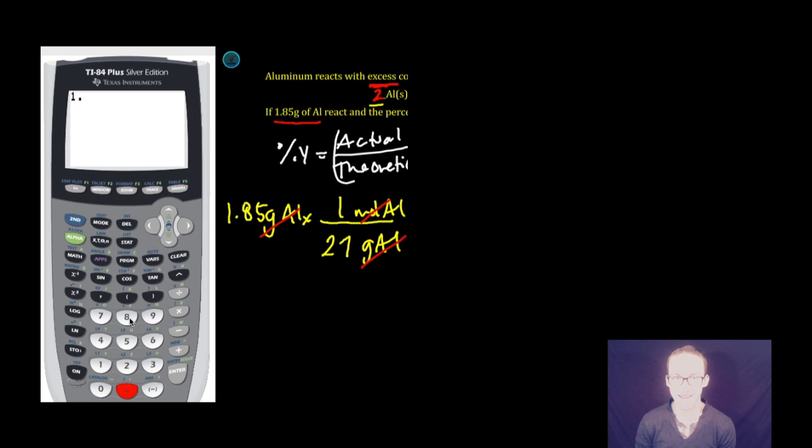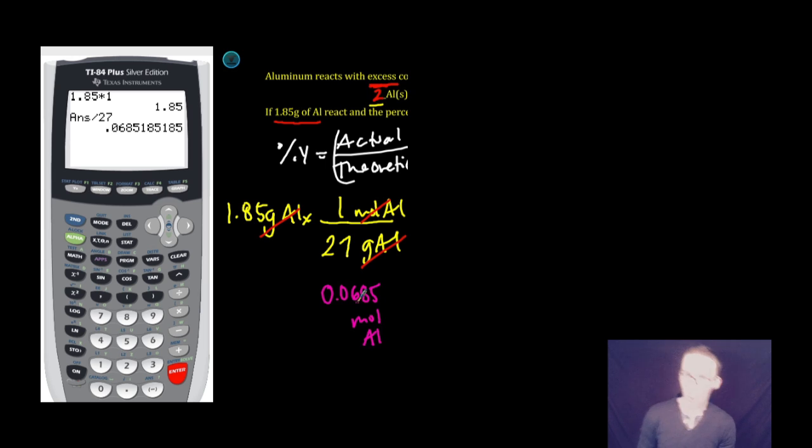1.85 times one, enter, divided by 27, enter. What did I just solve for? I have 0.0685 moles aluminum. Does that make sense? Yes! Why? Think about it. I have only 1.85 grams, and the mass in one mole is 27 grams.